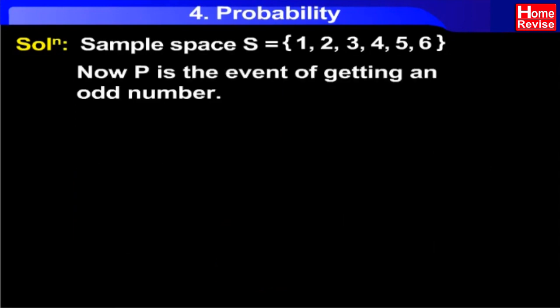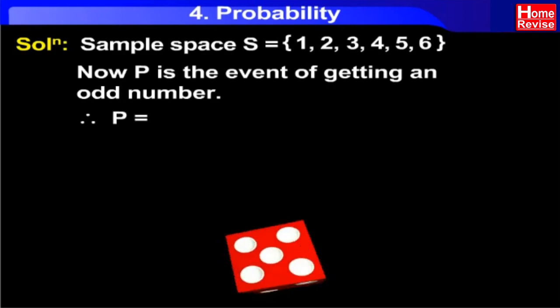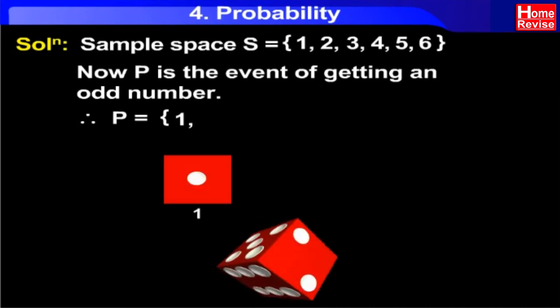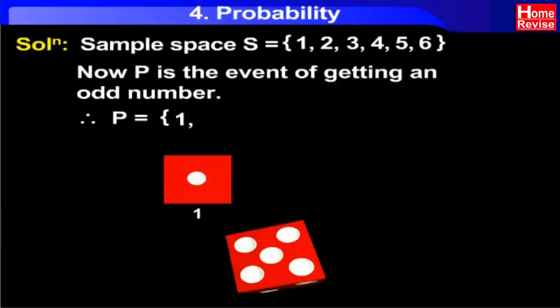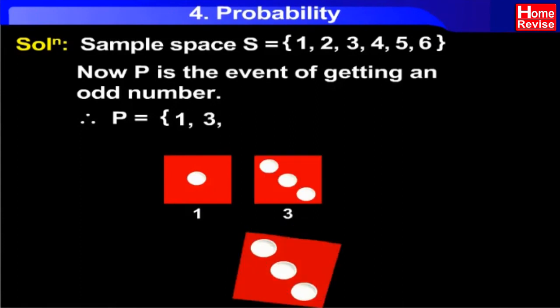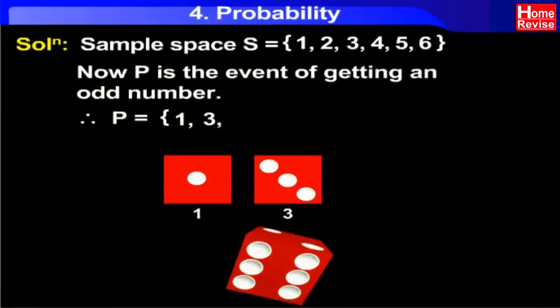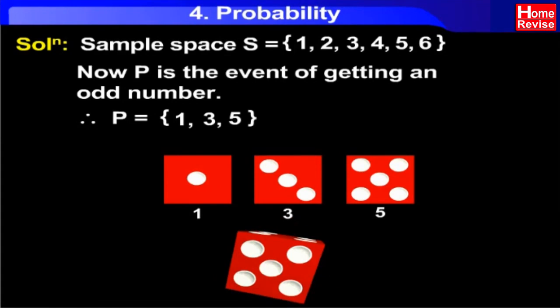Now, P is the event of getting an odd number. Therefore, P is equal to { 1, 3, 5 }. Therefore, N(P) is equal to 3.